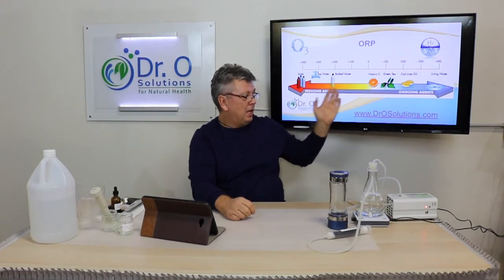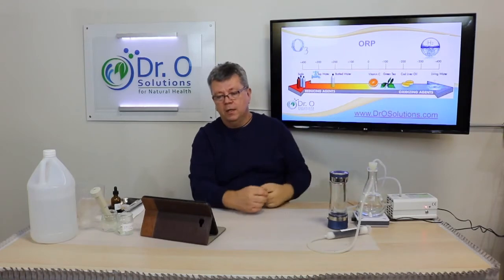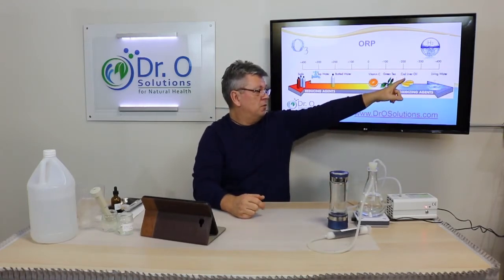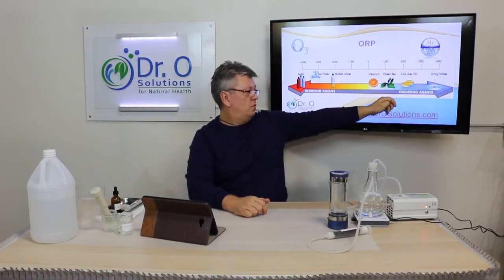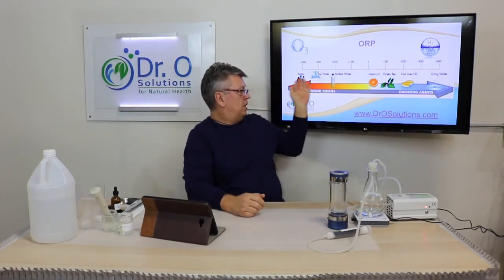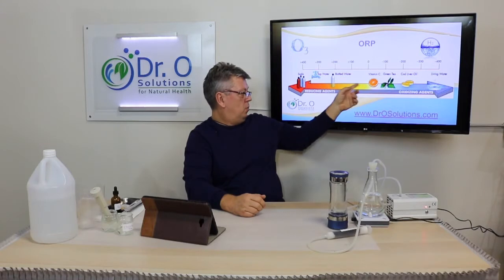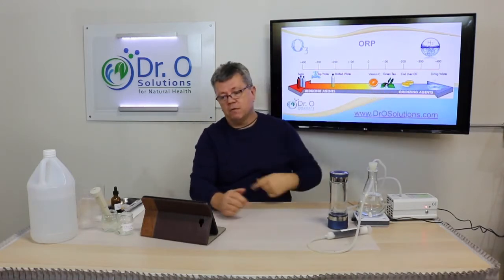That's the oxidative reduction potential scale. On the far end is hydrogen water, and ORP is measured in millivolts. As you can see, there is living water and cod liver oil at about minus 200, and vitamin C which is an antioxidant. On the other far end of the scale you have soda, tap water, and bottled water. This side represents the oxidative process and this side represents the reduction process.